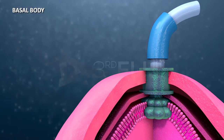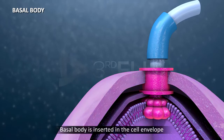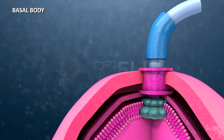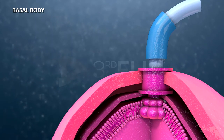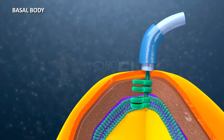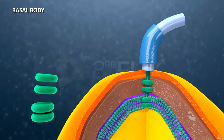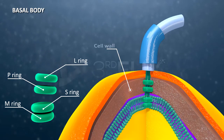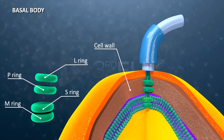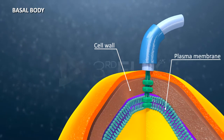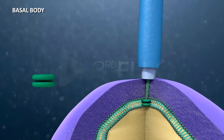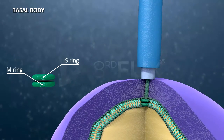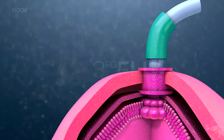The basal body is inserted in the cell envelope. It bears ring-like swellings in the region of the plasma membrane and cell wall. In gram-negative bacteria, there are two pairs of rings: L and P rings in the cell wall, and S and M rings in the plasma membrane. In gram-positive bacteria, a single pair of rings — S and M — are embedded in the plasma membrane.